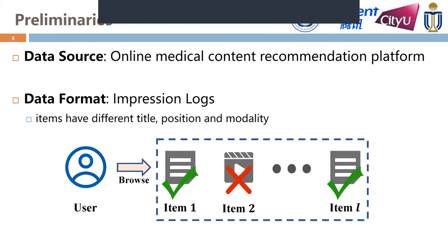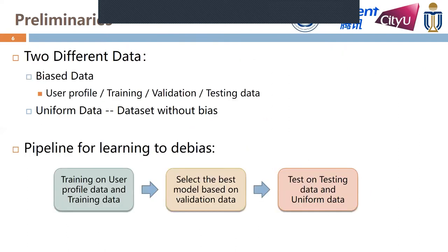Now let me introduce the dataset used in this paper. The dataset comes from a large online medical content recommendation platform. In this platform, items with different modalities are shown to users, and user modeling and clicking behaviors are collected. As shown in the figure, we format the user behavior data into impression logs. Each impression log records the items shown to a specific user, and the detailed information of each item includes title, display position, and modality information. We split these biased data into four parts: user profile, training, validation, and testing data.